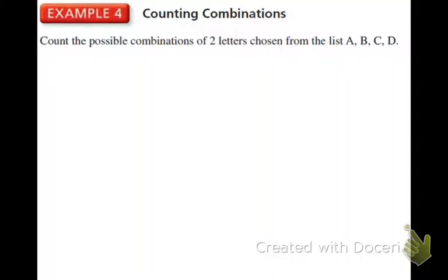We're going to do this without knowing any formulas first. Count the possible combinations of two letters chosen from the list A, B, C, D. It says count, so what do you think your answer is going to look like? A number. Count means number.